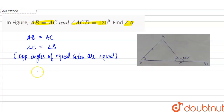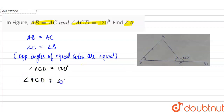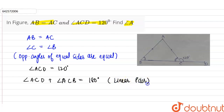Angle ACD is given as 120 degrees. Since angle ACD and angle ACB are on the same straight line, they form a linear pair. Therefore, angle ACD plus angle ACB equals 180 degrees. Substituting, angle ACB equals 180 minus 120 degrees, which gives angle ACB equal to 60 degrees.